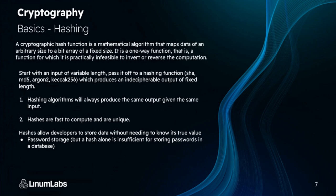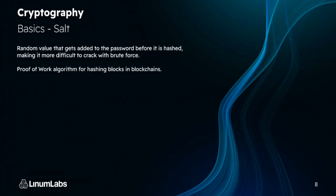Because they always produce the same output and are unique, you get something called a rainbow table, where you can look up hashes. For example, if I hash 'password123' using SHA256, I can see what that hash will be — and from a lookup table I can tell what was hashed. So hashing alone isn't secure enough for password storage. What we do is add something called salt — a random value added to the password before hashing, making it difficult to crack with brute force. Proof of work algorithms also add salt when hashing blocks on a blockchain.